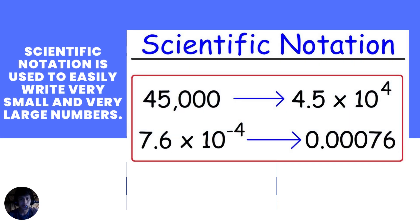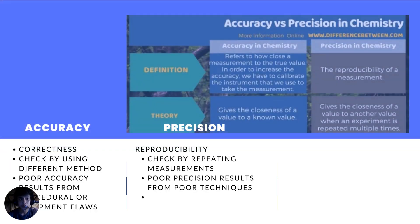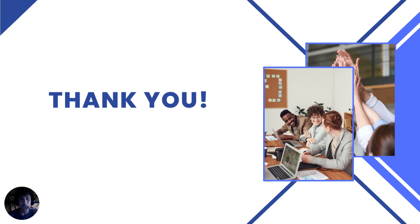Scientific notation is used to easily write very small or very large numbers. Accuracy refers to correctness and precision refers to reproducibility. That is all — I hope you enjoyed this presentation. See you in the next one, bye!